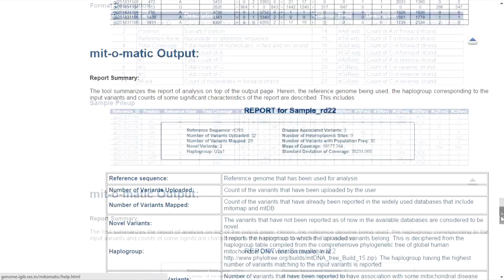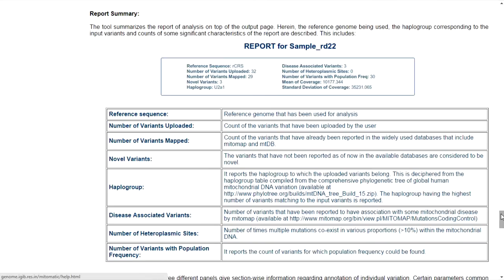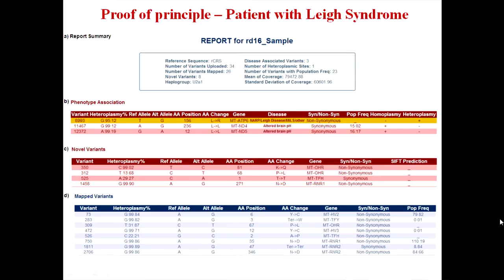The manual also describes commands for the command-line version and various examples to run the tool, and provides a detailed introduction to the generated report. As a proof of principle, the mitochondrial genome of a patient with Leigh syndrome was sequenced and a report was generated from Mitometic. The report is divided into four sections. The report summary details the reference genome used, number of variants uploaded, number of variants mapped, novel variations found, haplogroup corresponding to the deciphered variations, disease-associated variations, number of heteroplasmic sites, and number of variations with population frequencies.